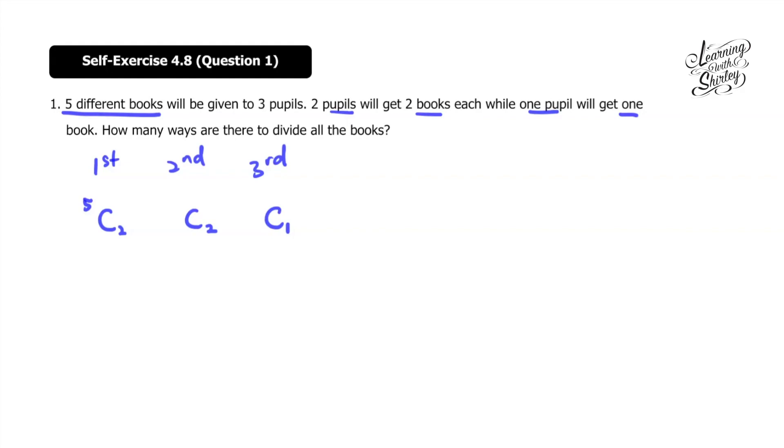And then because two books have already been given to the first pupil, therefore five minus two is three for the second pupil. So it'll be 3C2. And for the third pupil, because two books have already been given to the first pupil and two books for the second pupil, so left only one for the third pupil. So we times them together to get the number of ways.